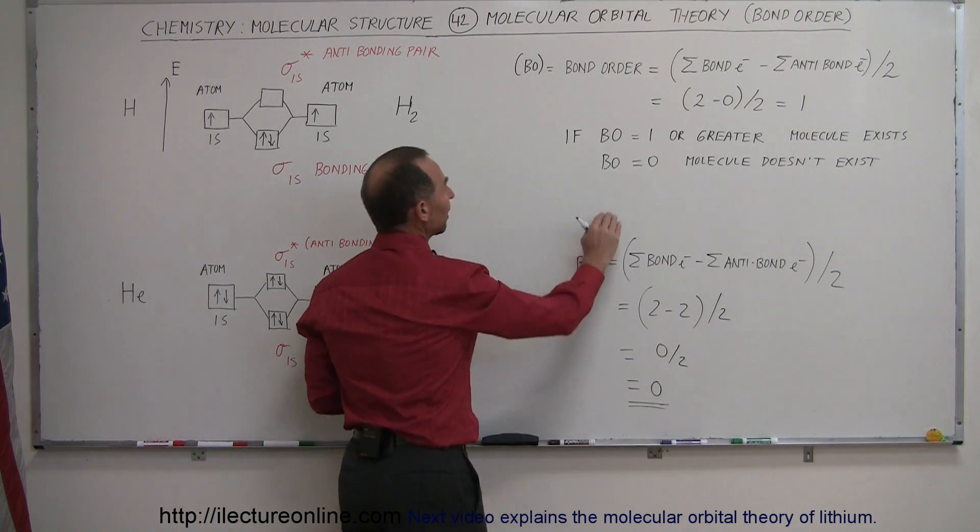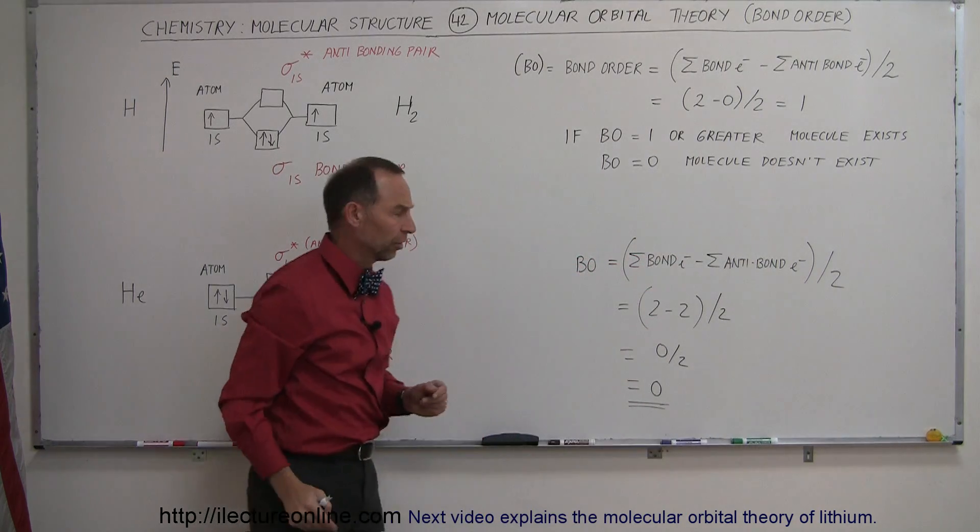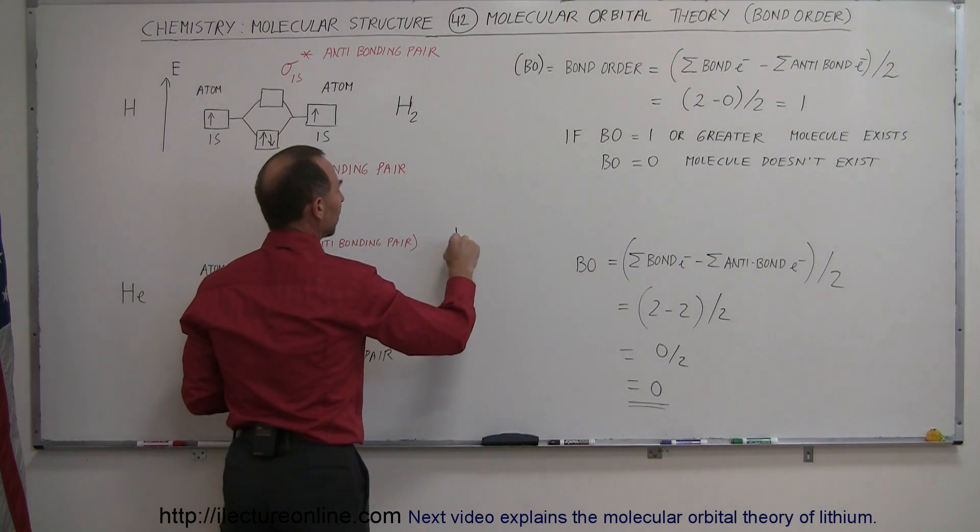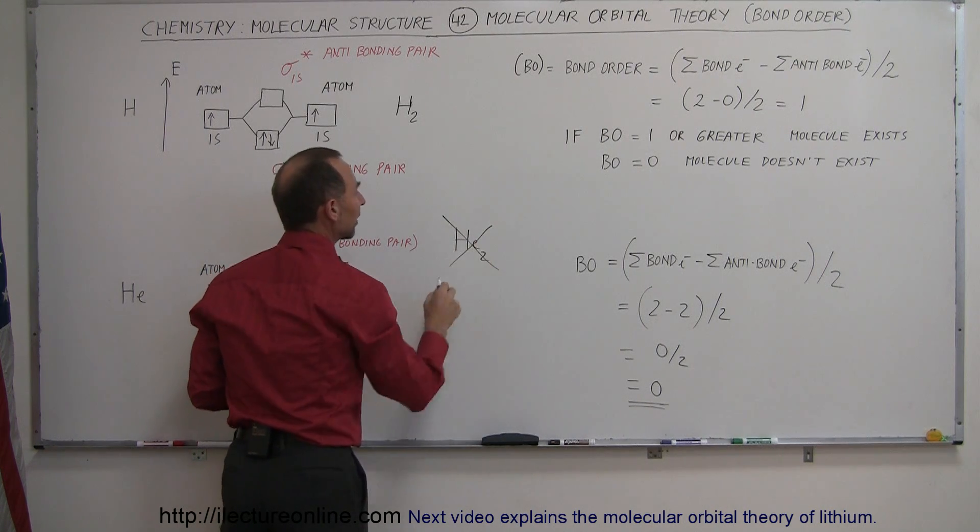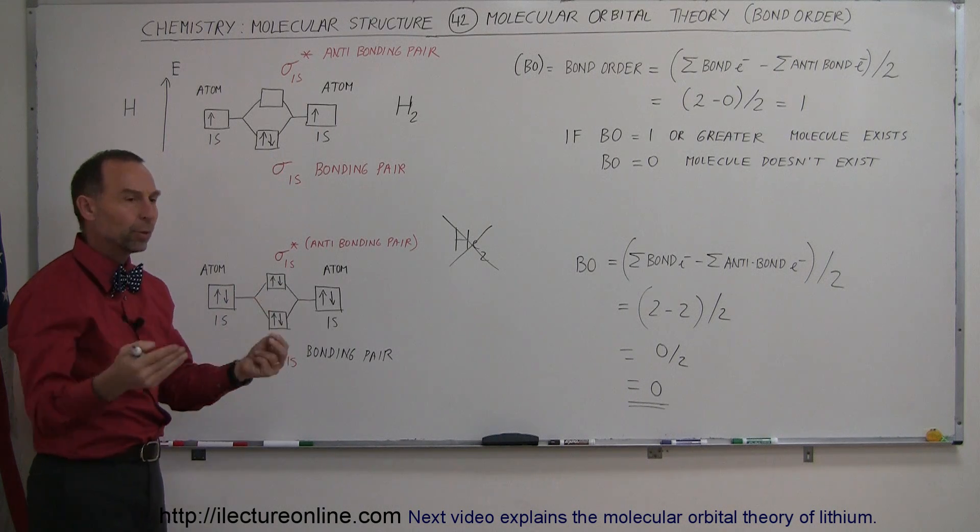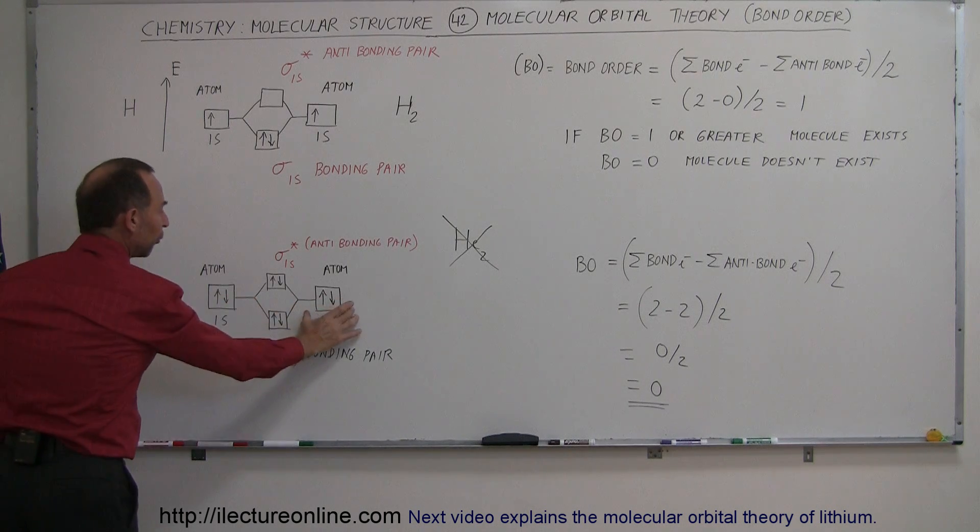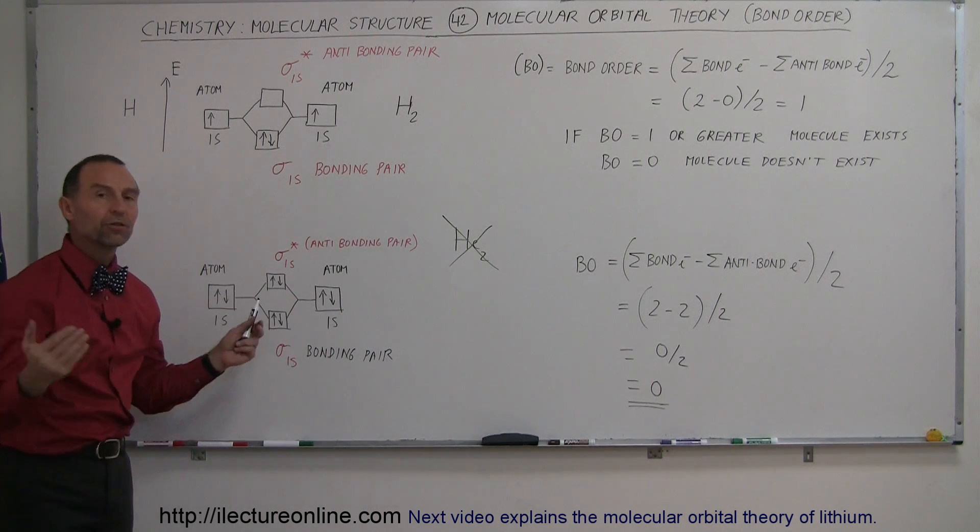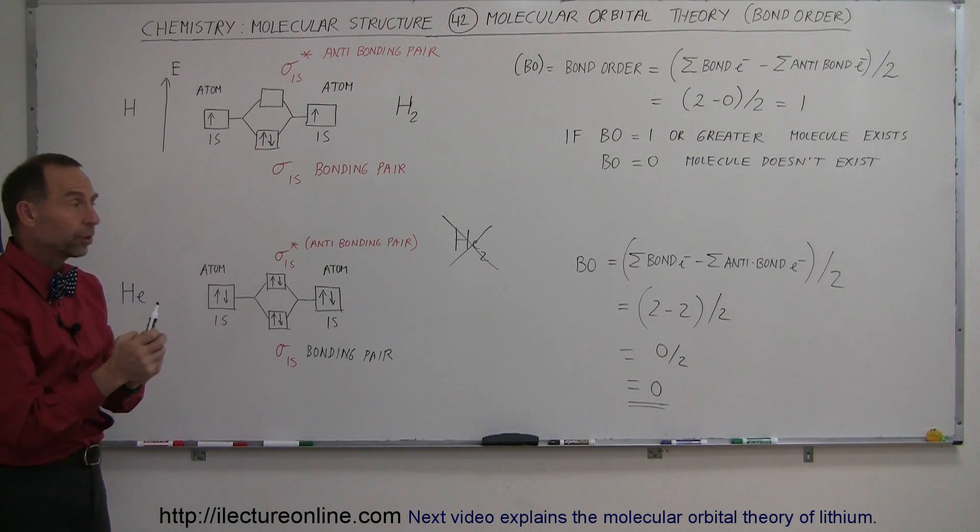The theory says that if the bond order is 0, the molecule does not exist. In other words, there's no such thing as a helium-2 molecule. This cannot exist because it cannot form a stable bond between the available electrons. If two atoms come to the table with a full 1s orbital, there's no way to form a bonding structure that will be stable and hold together.